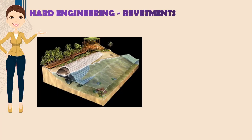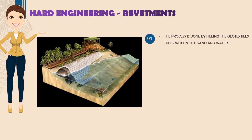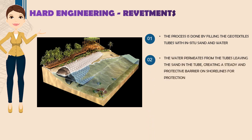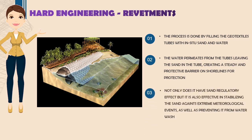The next technique is revetments. The process involves filling geotextile tubes with in-situ sand and water. The water permeates out of the tube, leaving the sand inside, creating a steady and protective barrier on the shoreline. This not only has a sand regulatory effect but is also effective in stabilizing the sand against extreme meteorological events and preventing water wash.